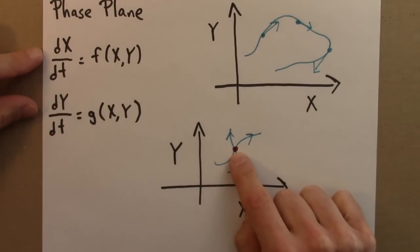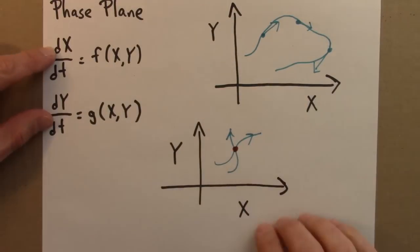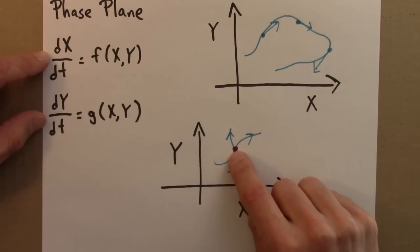So what this equation says is, if you tell me x and y, f is a deterministic function, g is a deterministic function. If you tell me x and y, there's one and only one dx/dt and dy/dt. That means there is one and only one arrow indicating the direction of change from this point.